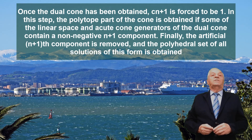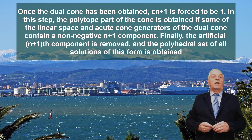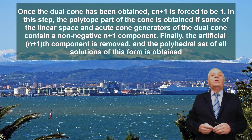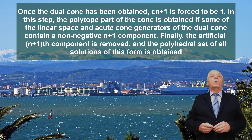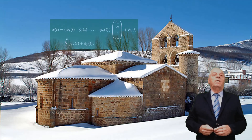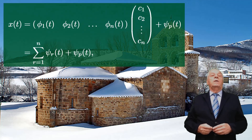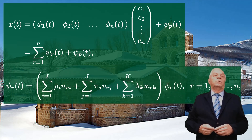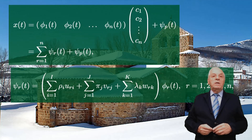Once the dual cone has been obtained, Cn+1 is forced to be 1. In this step, the polytope part of the cone is obtained if some of the linear space and acute cone generators of the dual cone contain a non-negative (n+1)-th component. Finally, the artificial (n+1)-th component is removed and the polyhedron set of all solutions is obtained. The set of solutions of the problem with the indicated constraints is given in this equation, with these conditions. These equations provide a method for obtaining the set of all solutions, if they exist.